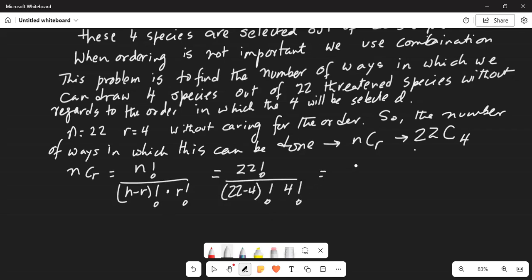So we can write this as 22, you know the definition of factorial, 22 multiplied by 21, multiplied by 20, multiplied by 19,